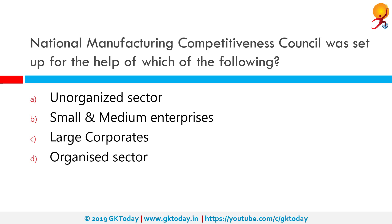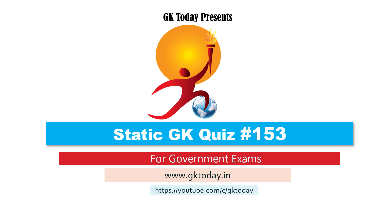The National Manufacturing Competitiveness Council was set up for the help of which of the following? The correct answer is small and medium enterprises. The National Manufacturing Competitiveness Council is an establishment set up by the erstwhile UPA government in 2004 as part of its Common Minimum Programme. It mandates providing a continuing forum for policy dialogue to energize and sustain the growth of manufacturing industry. That's all for today's quiz — until the next video, goodbye.